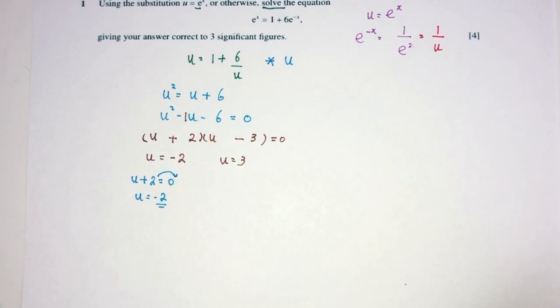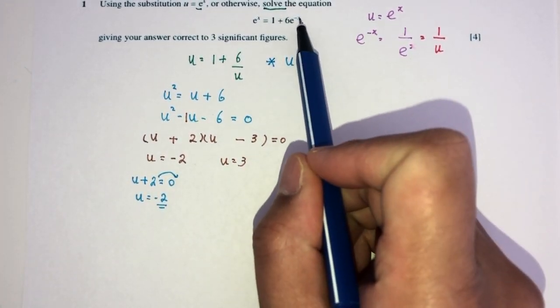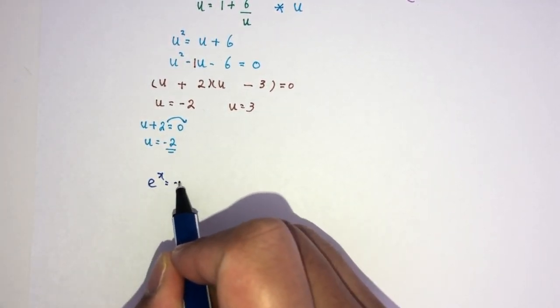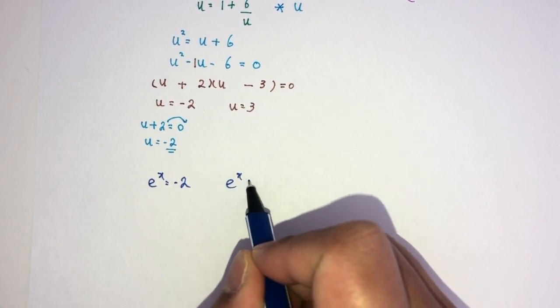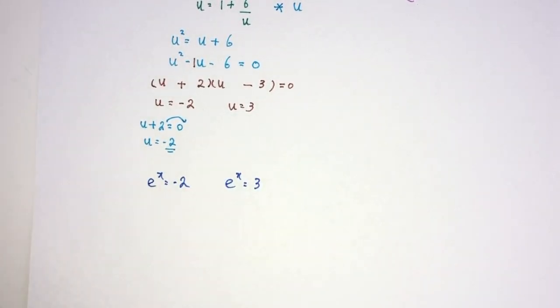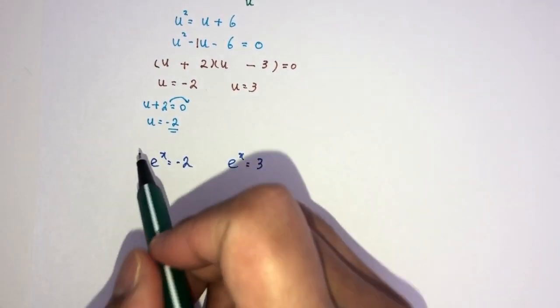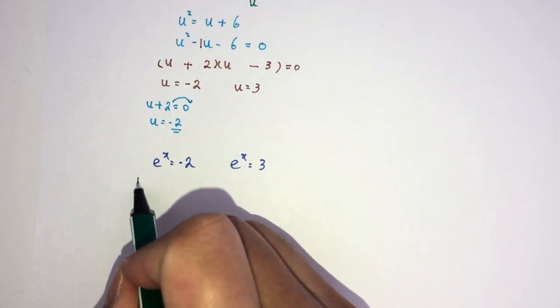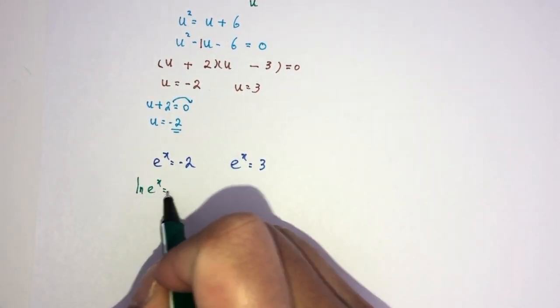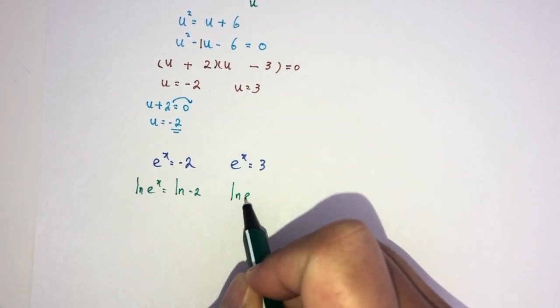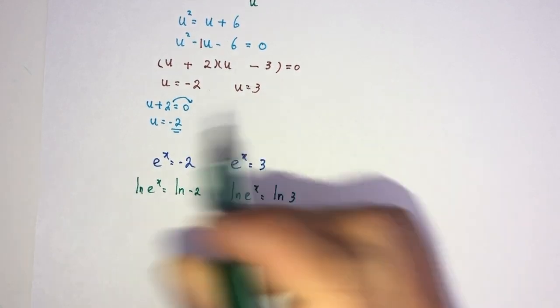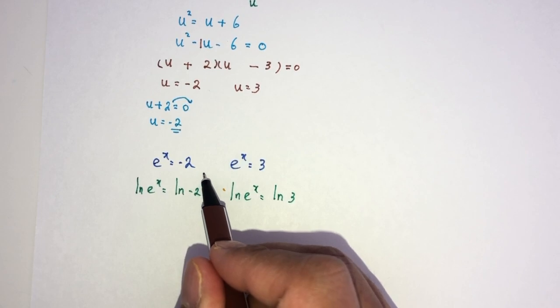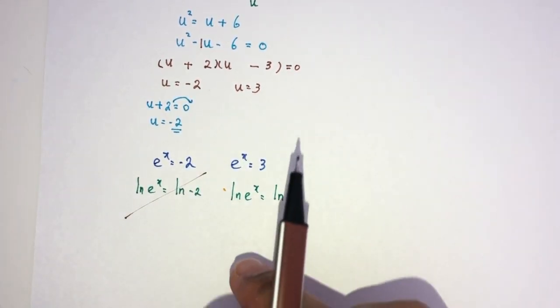So, replace back u by exponential x is equal to minus 2. Exponential x will be equal to the value of 3. Now, for this one, if you want to bring x down, x is a power right now. To bring this down, I have to apply ln on both sides. ln on both sides. Same over here, ln on both sides. Now, in this case, it will not be okay because ln cannot take a negative value. So, this one will be invalid. So we have to look at this one right now.